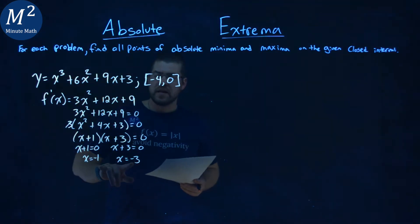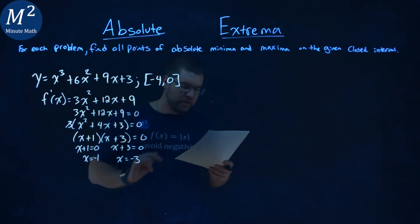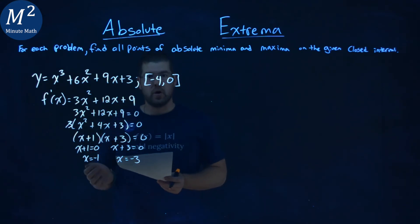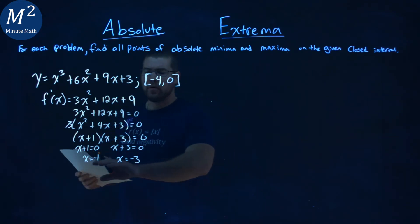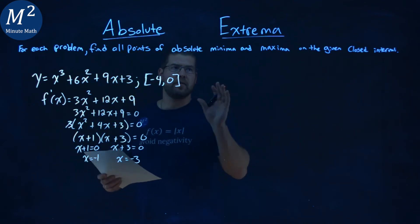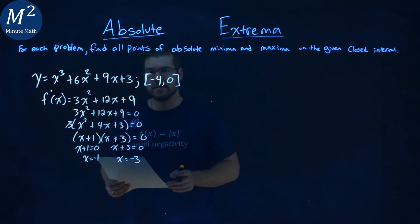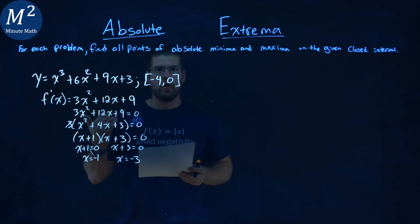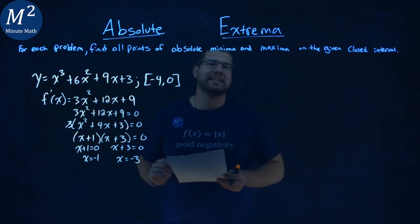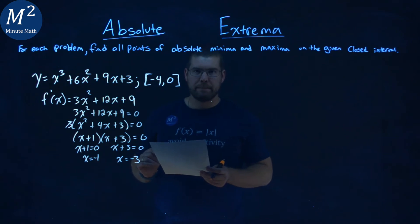Now we first want to check are both of these within our interval, and yes they are. So since both are in our interval, these critical values, and we have a closed interval from negative 4 to 0 here, we need to check all the values, the critical values we found, as well as the endpoints there.